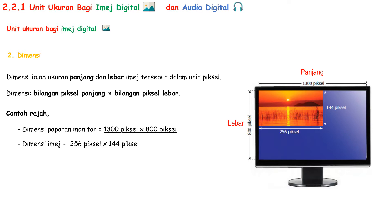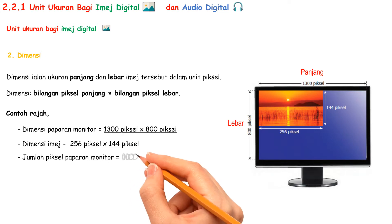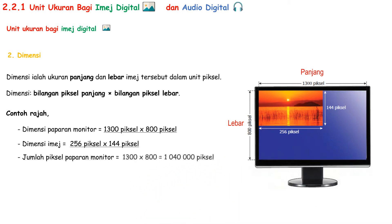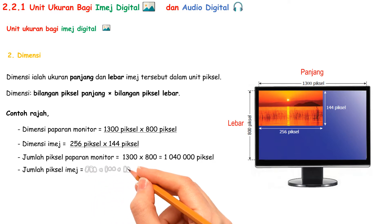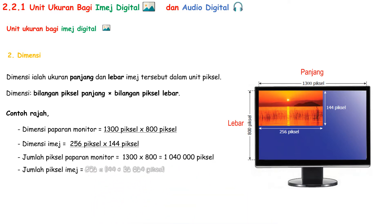But if we want to know how many pixels in total for the monitor display, we take 1,300 times 800 and get 1,040,000 pixels. While the total pixel for the image is 256 times 144, which gives 36,864 pixels.